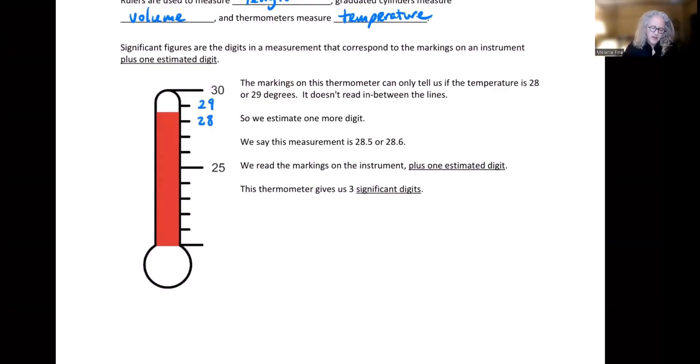If I wrote down 28 degrees or 29 degrees, I wouldn't feel good with that answer because it doesn't look like it's either 28 or 29. Rather, it looks sort of halfway in between, so that's the digit that we estimate. I don't know exactly whether it's 0.5 or 0.6 or maybe even 0.4, but I always estimate one more digit. So we don't say that this measurement is 28 or 29. We say it's 28.5. We always read the markings on the instrument plus one estimated digit. We say that this thermometer gives us three significant digits.